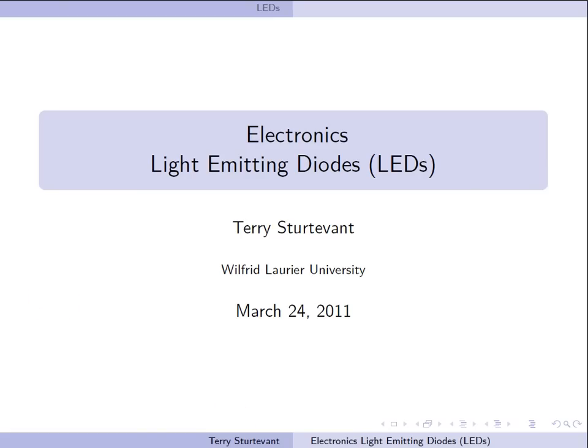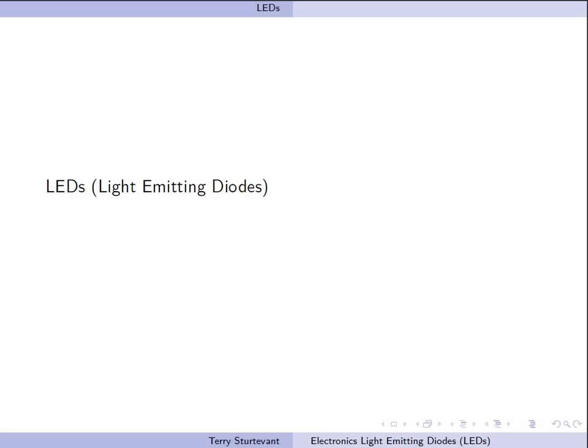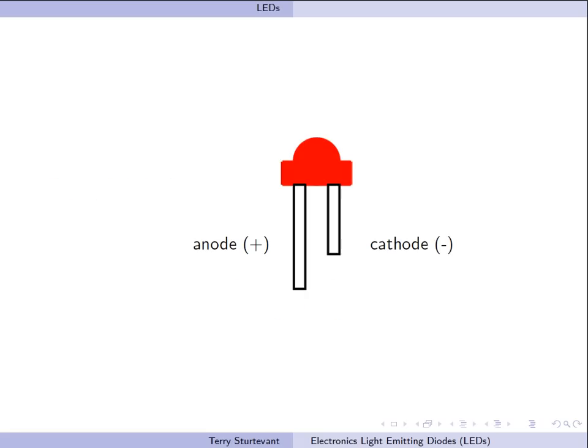This is a screencast about light emitting diodes, or LEDs. An LED has two pins, the anode and the cathode. When current flows from the anode to the cathode, the LED will light up.